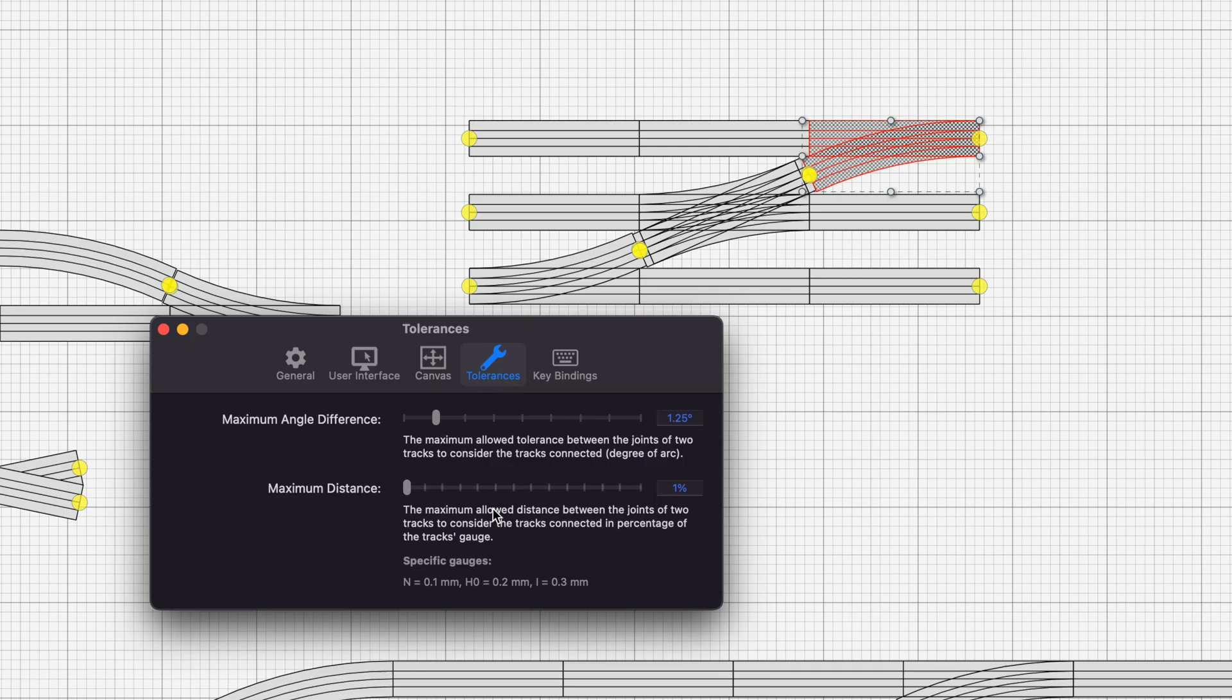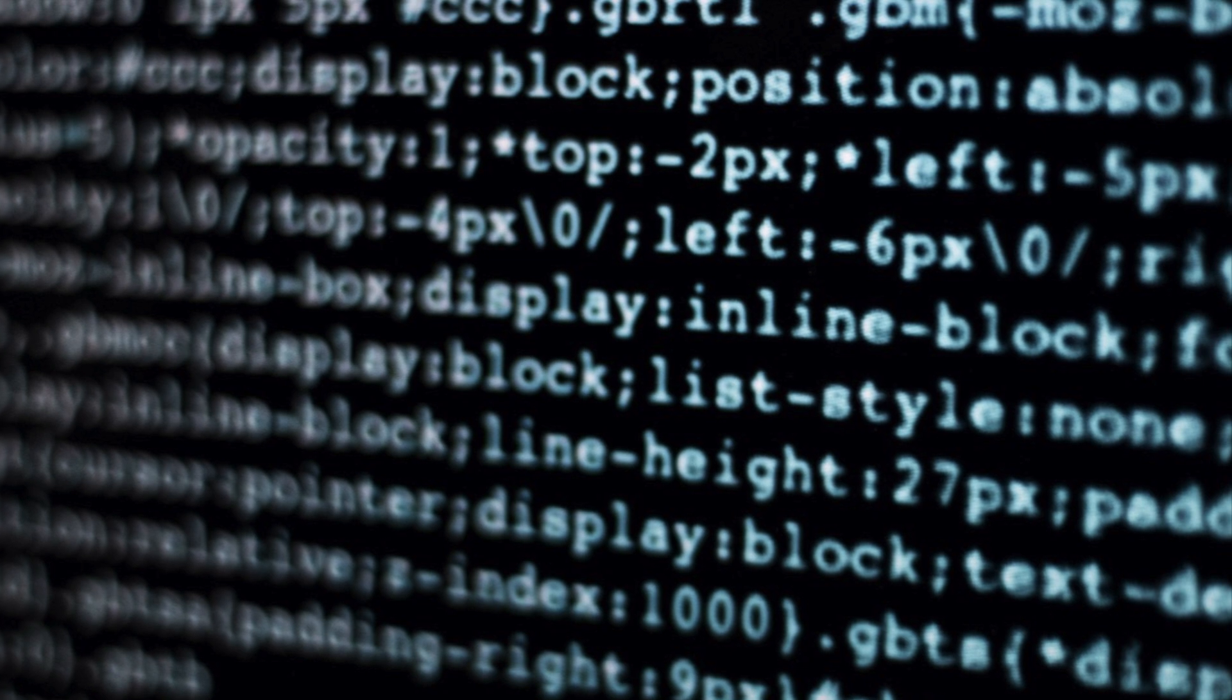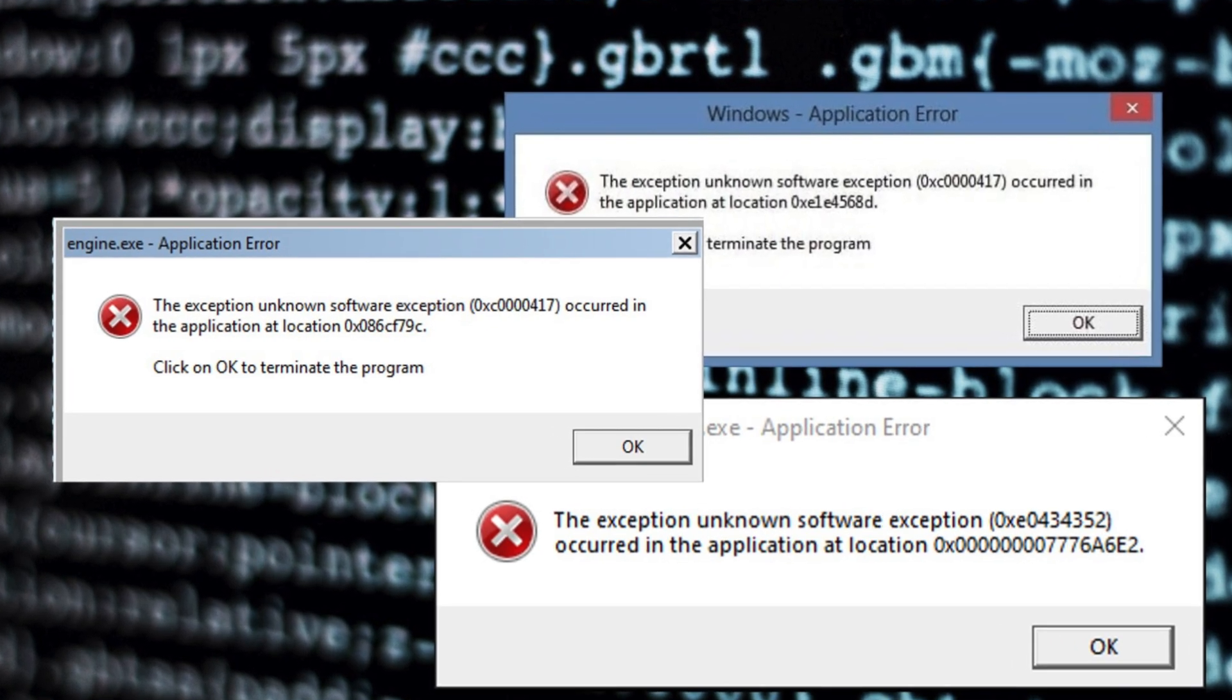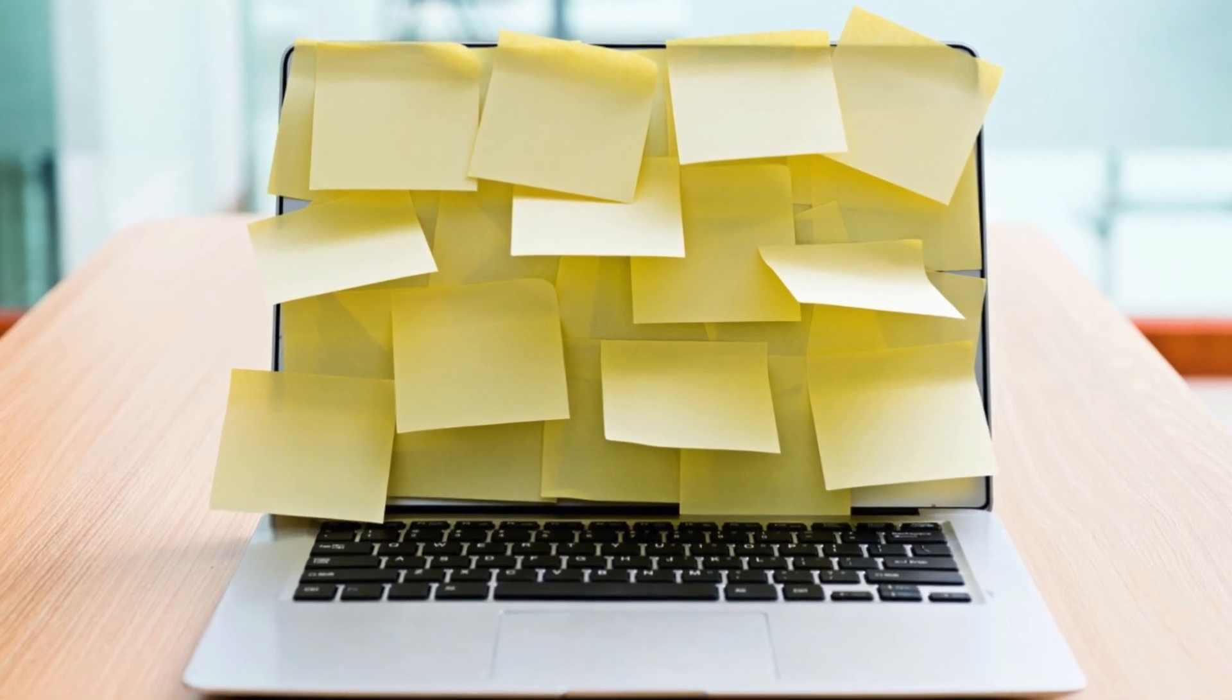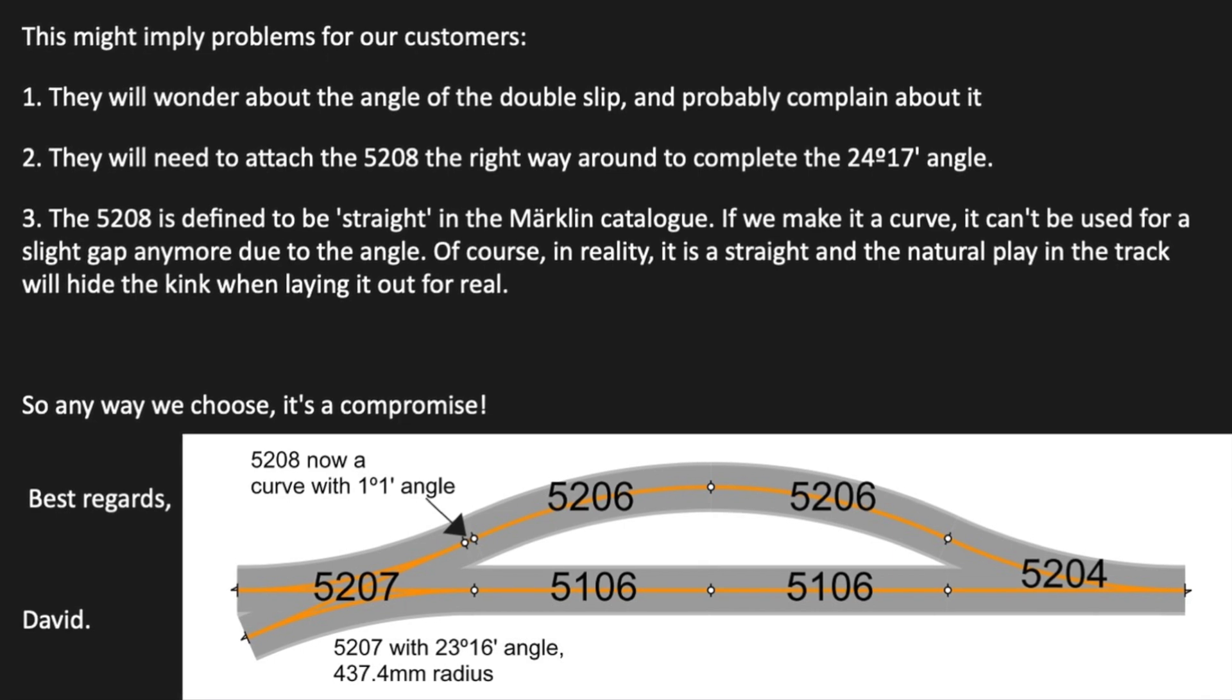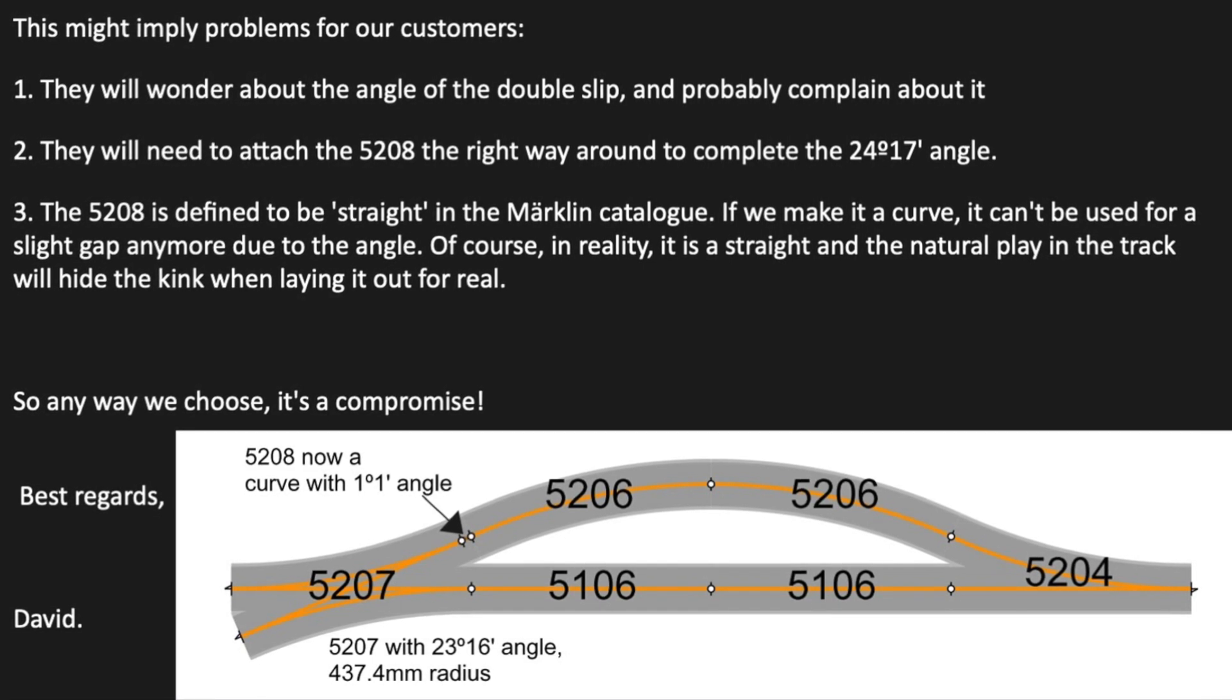You could use large tolerances with correctly sized crossings, which would make the software think tracks are joined, but this solution is messy and would require users to lay their track in a certain sequence to achieve the desired result without generating other alignment issues in the process. Or you could try and program something, but this would mean introducing an exception that could be difficult to maintain in the long run and potentially could cause trouble with other software components or library.